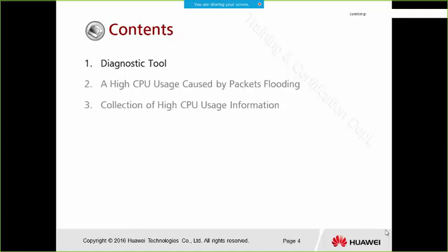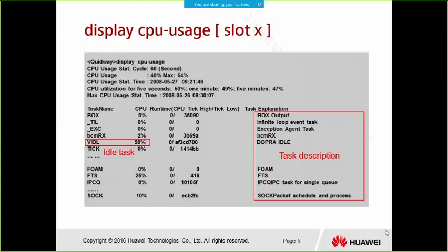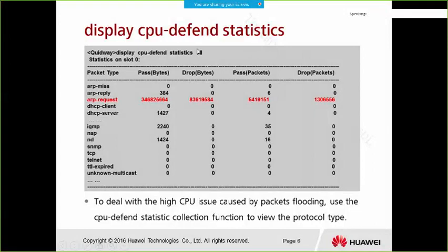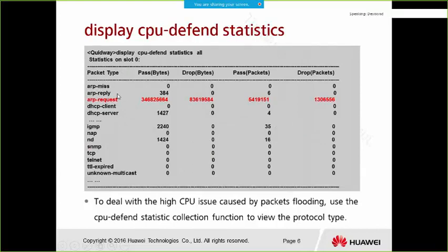First, let's look at the diagnostic tools. We can use 'display CPU usage' to check the CPU usage of the device. Here we can see the idle task and the task descriptions. Then we can use 'display CPU defend statistics', which shows all packets sent to the CPU, including how many packets have been passed and how many have been dropped.